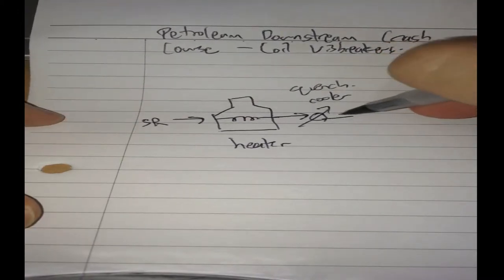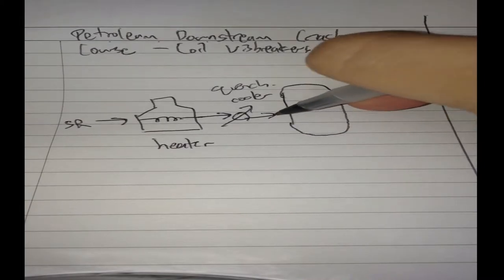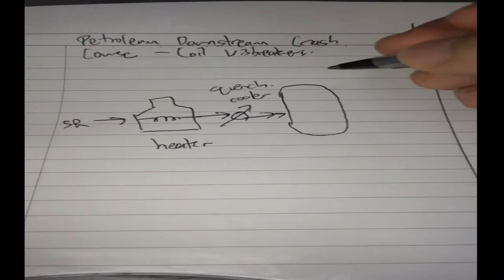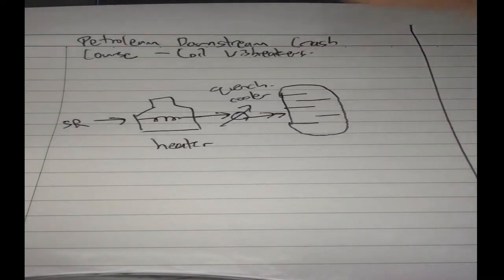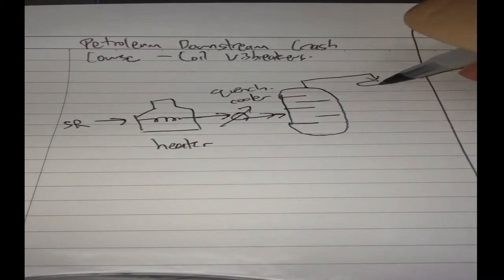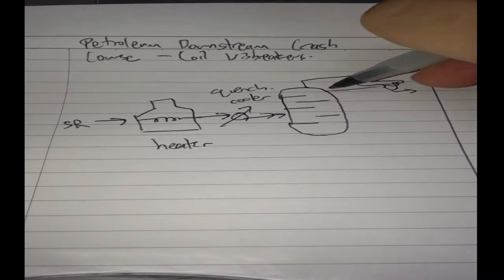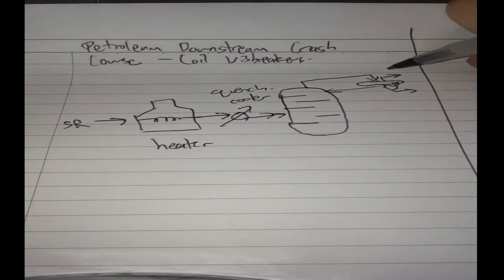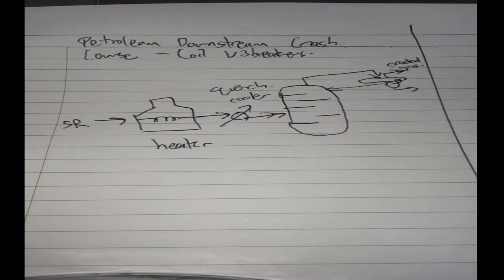And after that, you send it to a fractionator. This is a mini atmospheric distillation tower, again with the usual trays and stuff, side strippers and everything like that. And what you'll get, you'll draw off your gas. Here we'll have water, here's some condensates, your reflux. So this is a cracked gas. Here you'll have some methanes, ethanes, and even ethylenes sometimes.